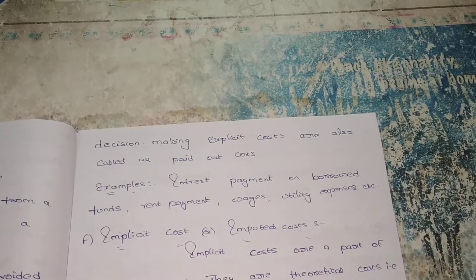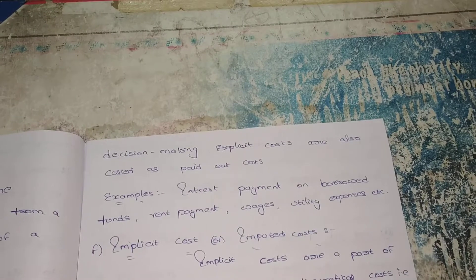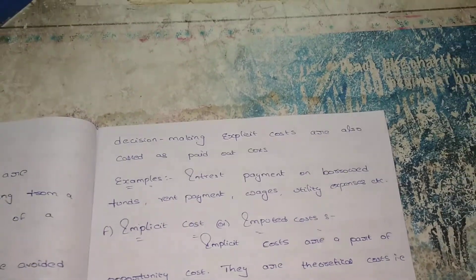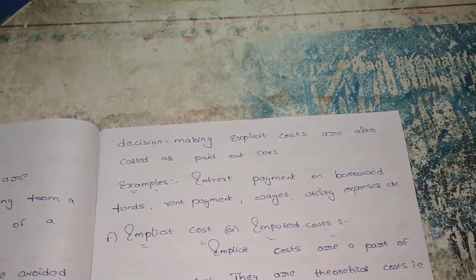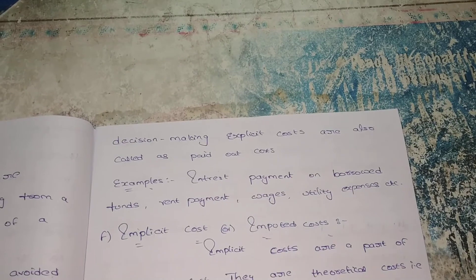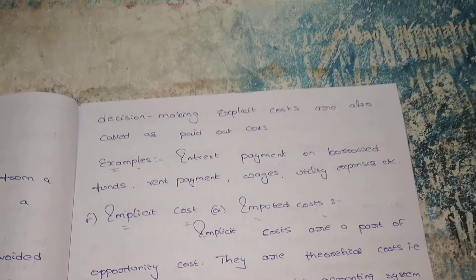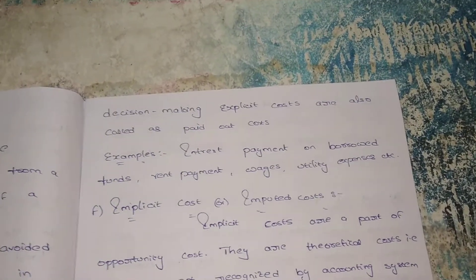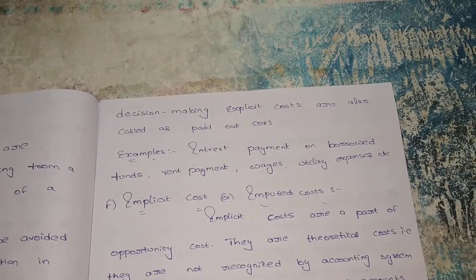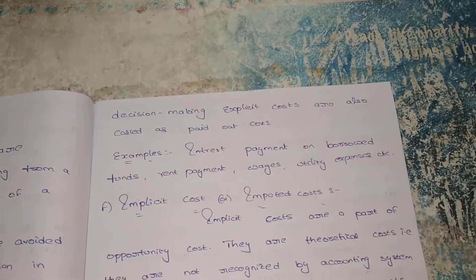There are different types of costs in our business. Explicit cost means directly paying to others. For example, interest payment on borrowed funds — if our organization borrows from a person, we pay interest, so that interest is an explicit cost. We also pay rent for our factory building, wages to our labor, and utility expenses. These all come under explicit cost, which is used for preparing financial statements and for taking decisions.